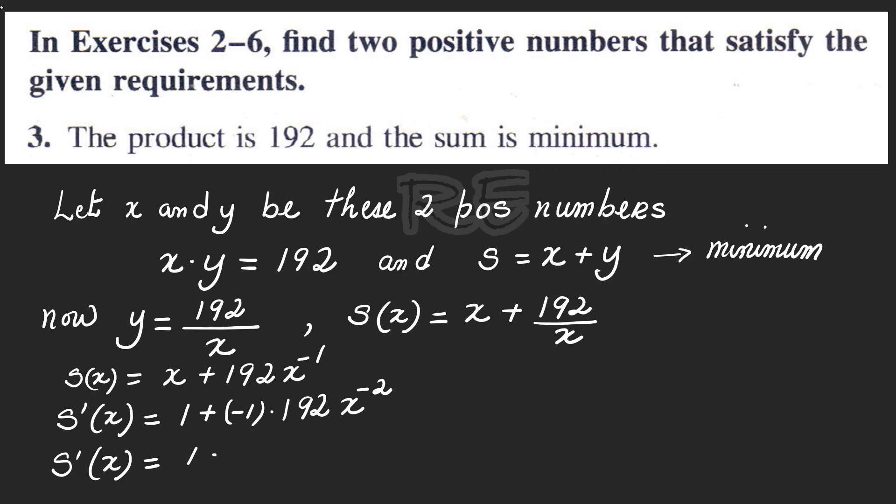So S prime of x is therefore 1 minus 192 over x squared. X squared is the common denominator. Therefore, S prime of x is x squared minus 192 over x squared.